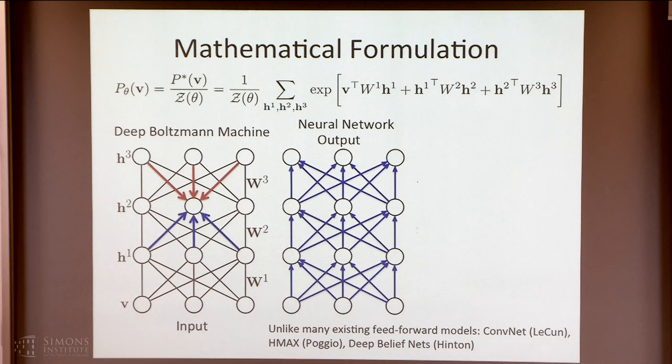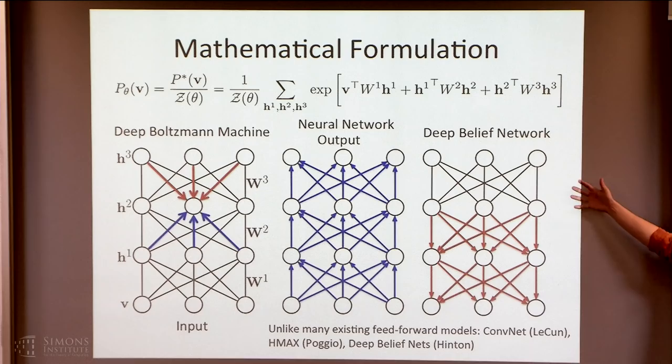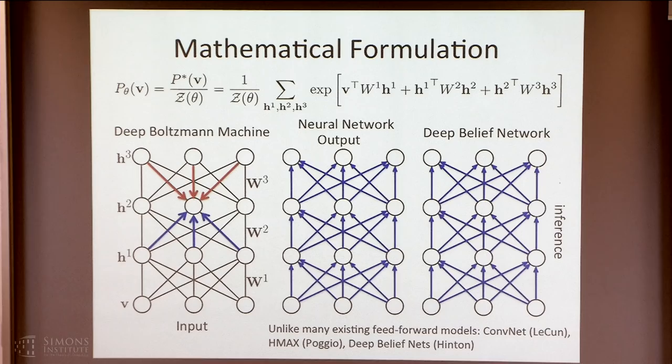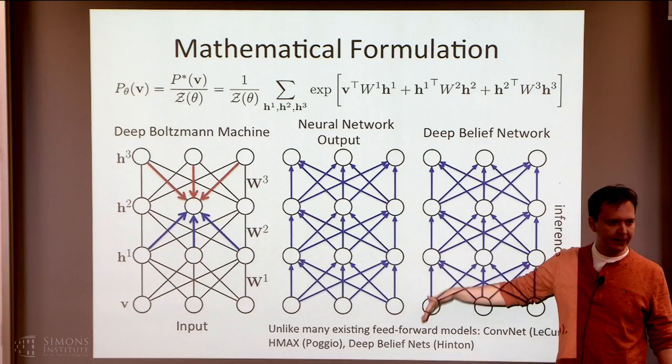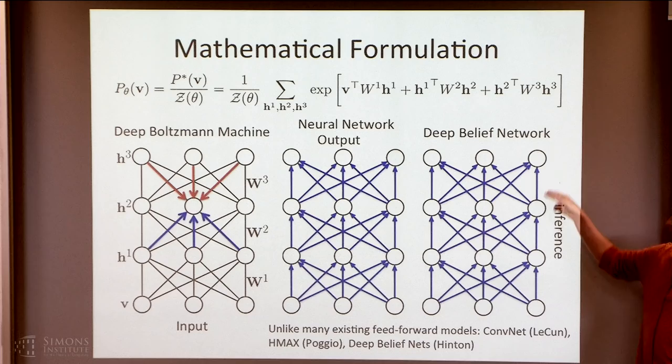If you compare these models to traditional neural network models, traditional neural networks are just feed-forward and deterministic — given input, you produce some output. In these models, you're actually trying to model the distribution over the input space. For generative models like deep belief networks, the inference is really just a feed-forward approximation over the states of the variables. It's a feed-forward inference.